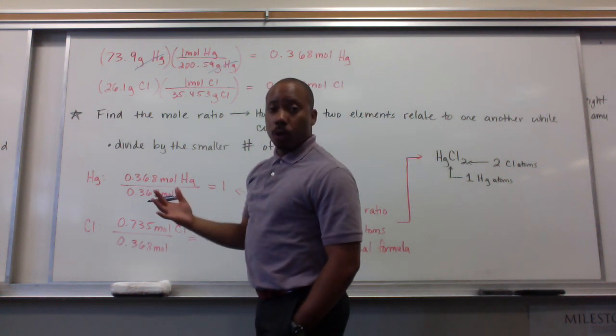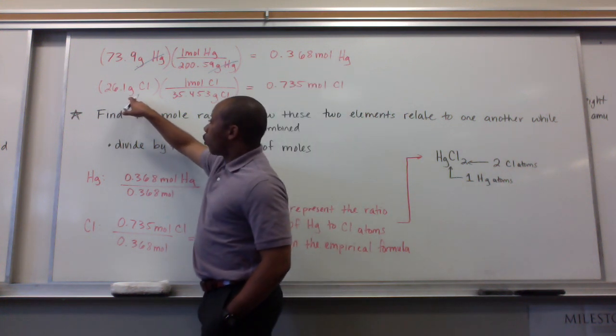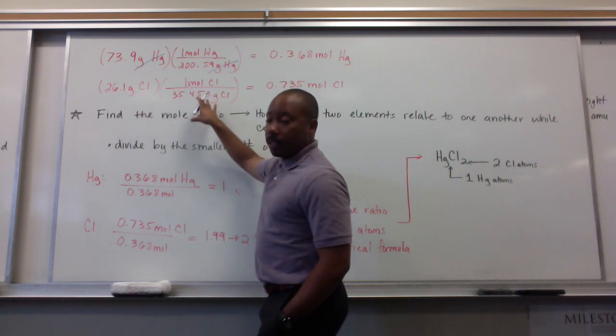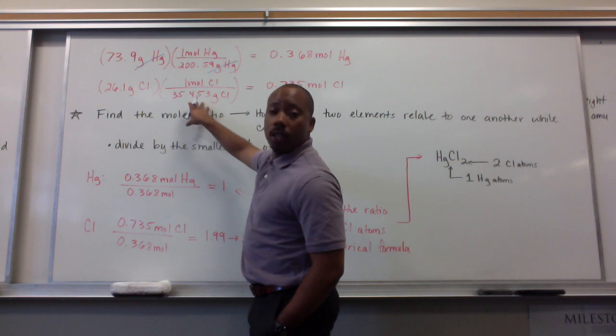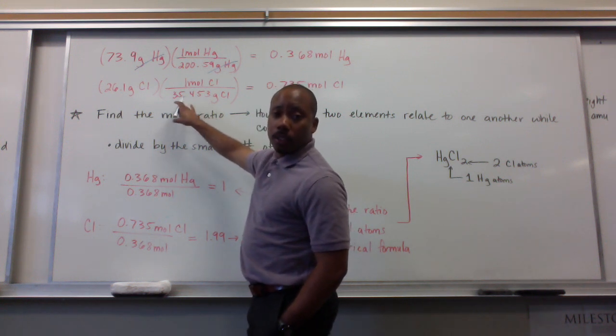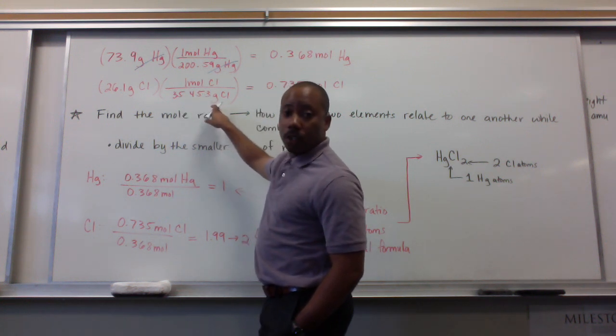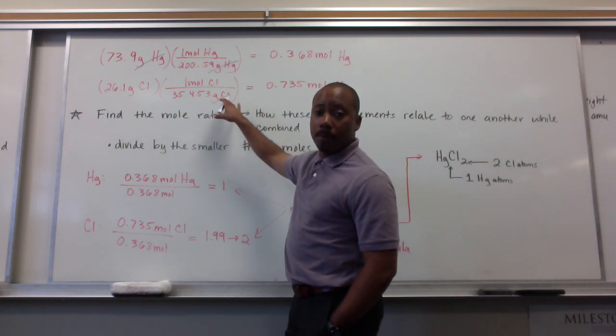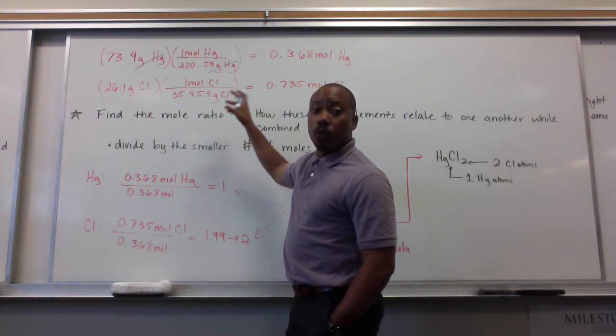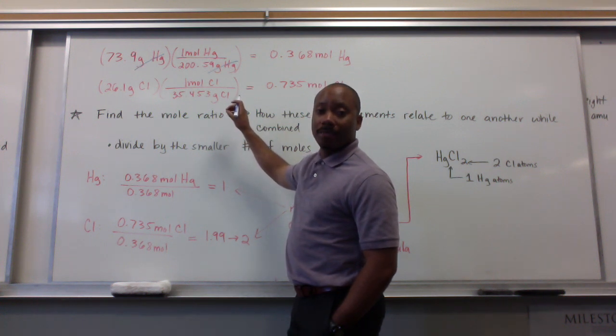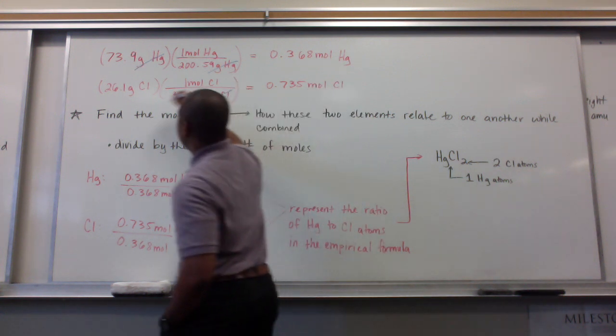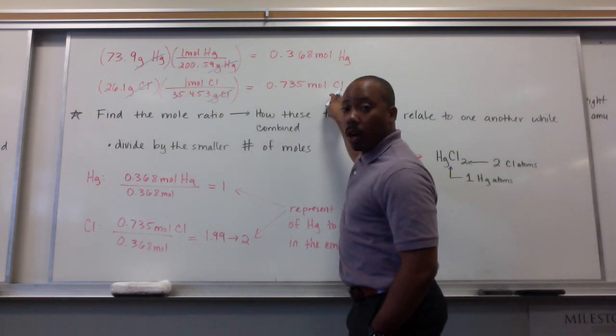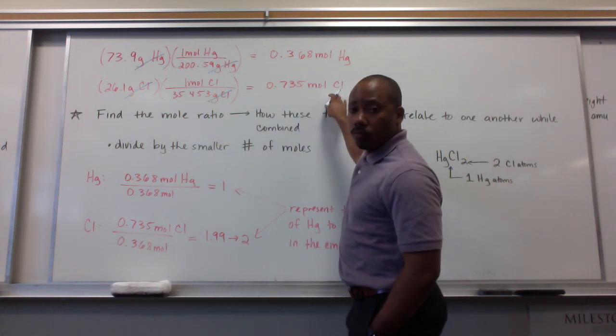I do the same for chlorine. In a 26.1-gram sample of chlorine, I multiply here times this conversion factor, which is the molar mass. And this is 35.453 grams of chlorine. This is the average atomic mass of a chlorine atom, or the mass of one mole of chlorine. And I do this division problem. I get 0.735 moles of chlorine.